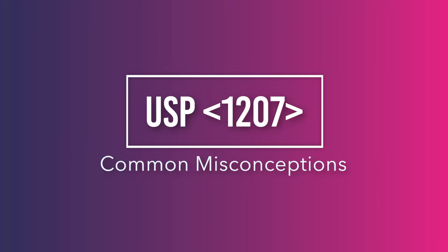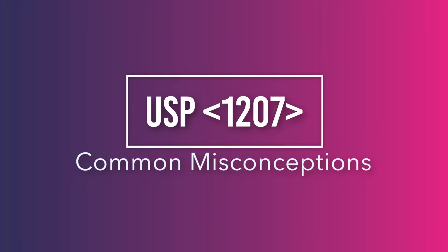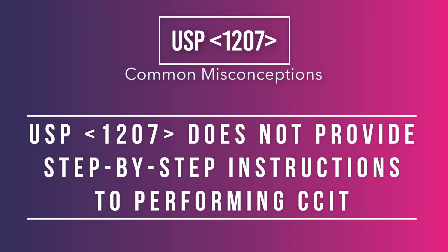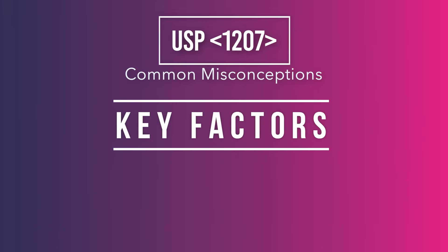To fully understand your USP 1207 CCI testing program, we must correct some common misconceptions. USP 1207 is a general information chapter that provides guidelines to be followed. It does not provide step-by-step instruction on what test to choose or how to operate the specific instrument being used. The selection of the optimal test method for a specific product and package system is dependent on a number of key factors.